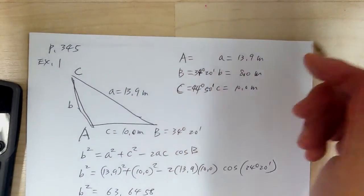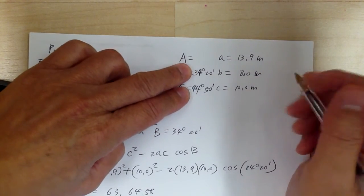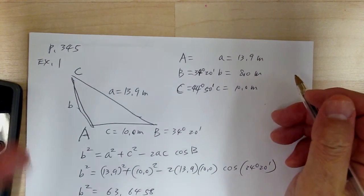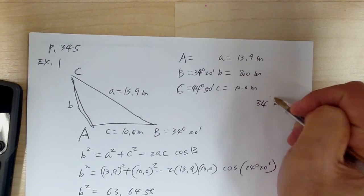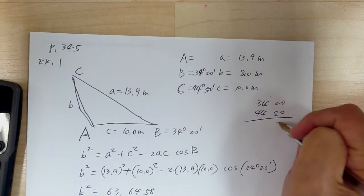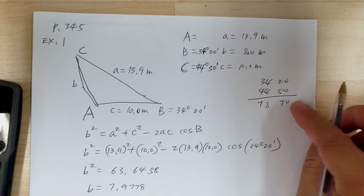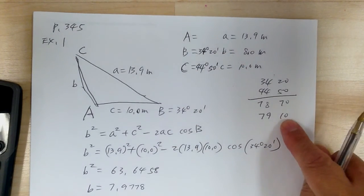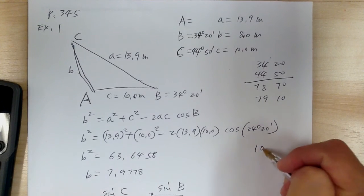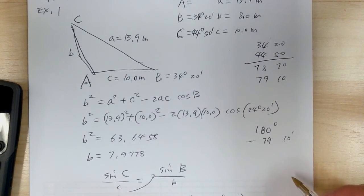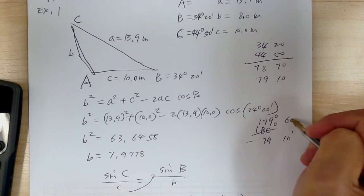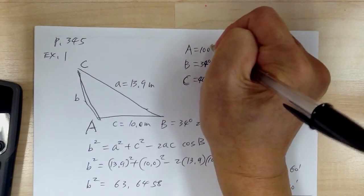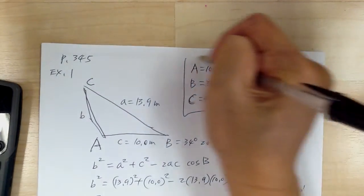So once you do that, you can find angle A by subtracting. Add the two known angles: 34 degrees 20 minutes plus 44 degrees 50 minutes. Adding the minutes: 20 plus 50 gives 70 minutes, but carry — every 60 minutes equals one degree — so that becomes 79 degrees 10 minutes. Then subtract from 180: 180 degrees minus 79 degrees 10 minutes. Borrow to get 179 degrees 60 minutes, subtract to get 100 degrees 50 minutes. So angle A equals 100 degrees 50 minutes.